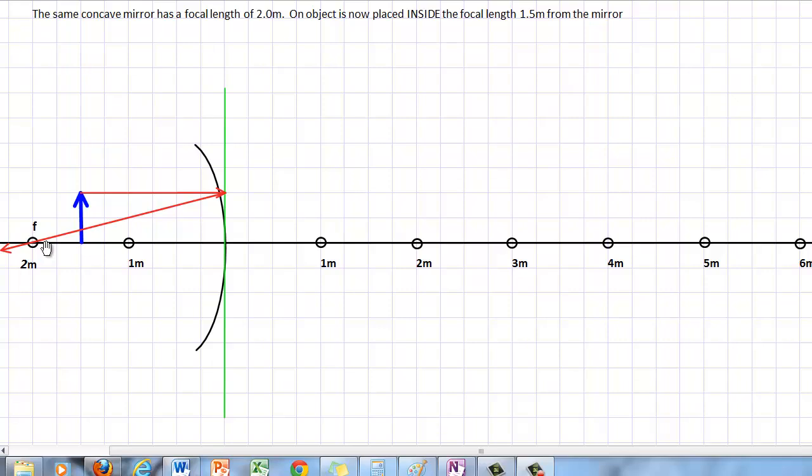Now our second ray, because we're in between the focal point and the mirror, that second ray gets a little bit tricky. But what you want to do is start a ray in line with this focal point so that it strikes the mirror and then comes off parallel. I'll draw that ray now so you know what I mean. I would take my ruler and line it up with this focal point.